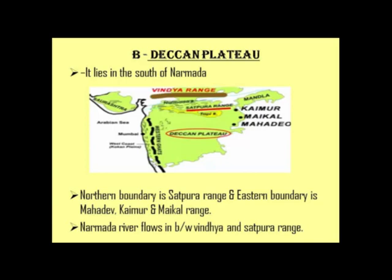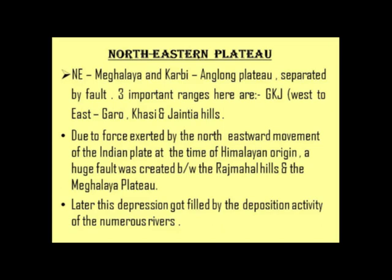Deccan Plateau lies south of the Narmada River. The Satpura Ranges form the northern boundary, and the Mahadev, Kayamur, and Maikal Ranges form the eastern boundary of the Deccan Plateau. The Narmada River flows between the Vindhya and Satpura Ranges. Deccan Plateau is higher on the western side and slopes gently towards the east, so the majority of rivers drain eastward into the Bay of Bengal.